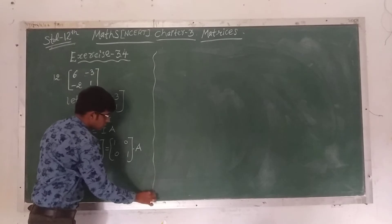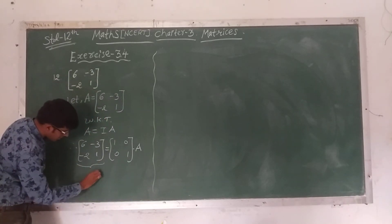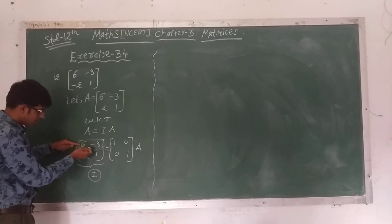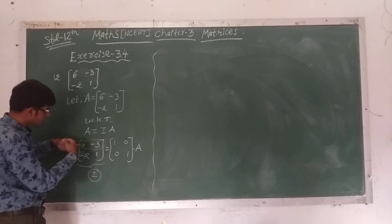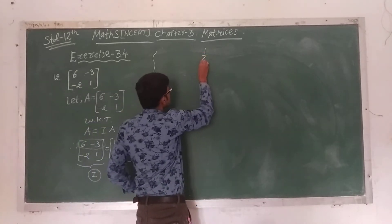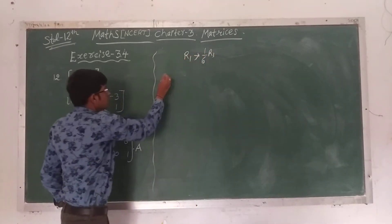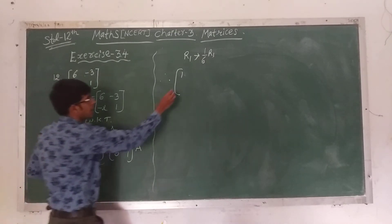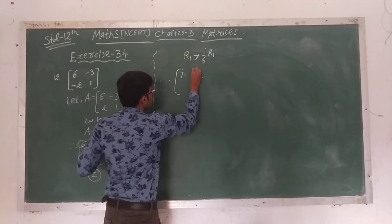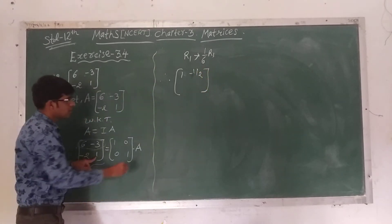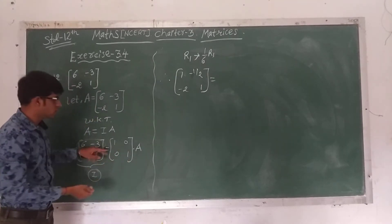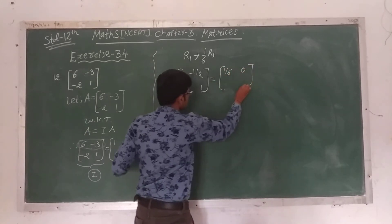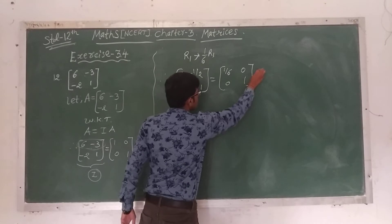Our goal is to write the left side as the identity matrix. We have to make the A(1,1) element equal to 1. We divide the first row by 6: (1/6)R1. This gives 6÷6 = 1, -3÷6 = -1/2. Second row remains [-2, 1]. On the right hand side: [1/6, 0; 0, 1] times A.